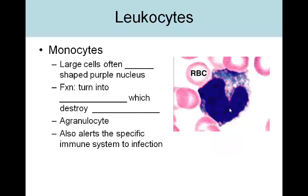Next we have monocytes. These are usually the largest of the leukocytes. They have a very large nucleus that is often shaped like a heart or a U — you can see in this picture it looks almost like a heart shape. That's very characteristic of a monocyte. Monocytes in the bloodstream don't really have any function; they develop their function once they leave the bloodstream. When a monocyte leaves the bloodstream, it turns into a macrophage — one of those large eating cells. Despite the appearance of some granules in the cytoplasm, monocytes don't have as many granules compared to the leukocytes we looked at previously.